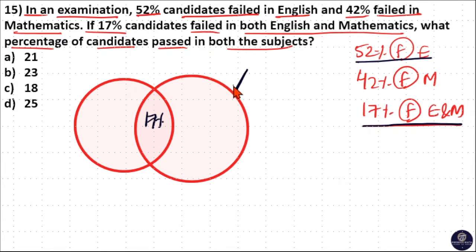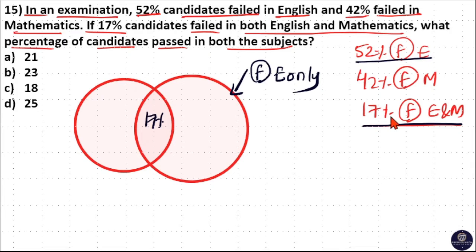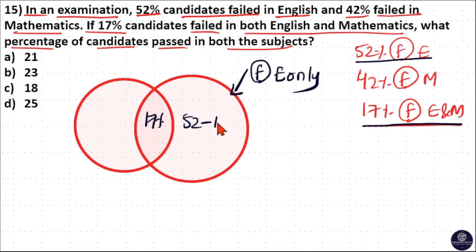We need to find the students who failed in English only. Since students who failed in English also include those who failed in both subjects, students who failed in English only equals 52 minus 17, which is 35%.